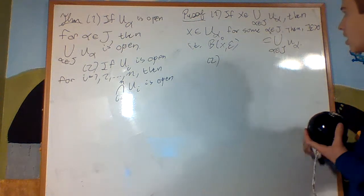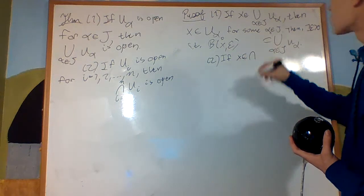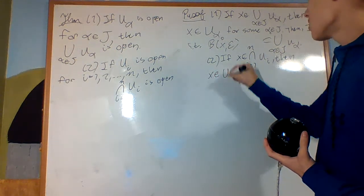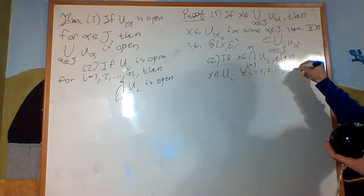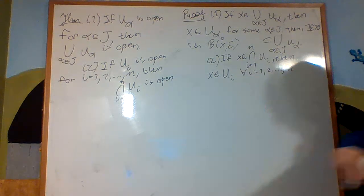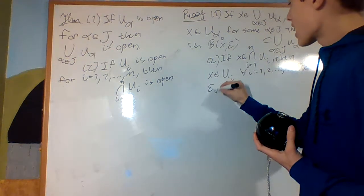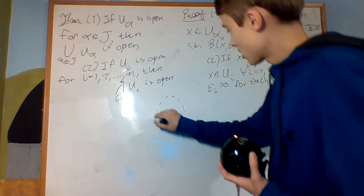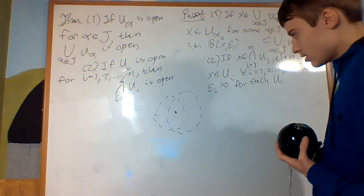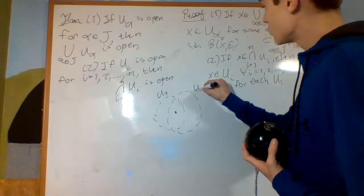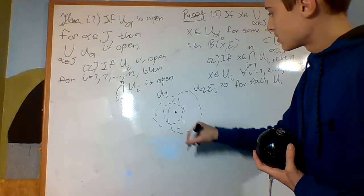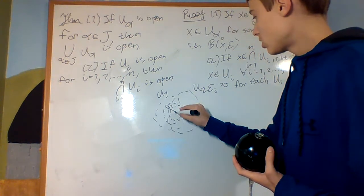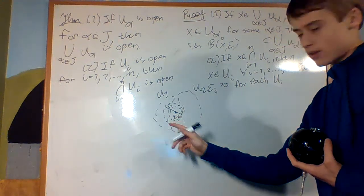For the finite intersection one, if x is an element of the intersection from i equals 1 to n of U_i, then x is an element of U_i for all i equals 1 to n. But each U_i is open. Pick epsilon_i bigger than zero for each U_i. So if I had two sets, and my point was in the intersection, I'd pick, and this one was U_1, this one's U_2. I'd pick this one, which is inside U_1, I'll call it epsilon 1, that radius, epsilon 1, and then another one, which is inside U_2, I'll call epsilon 2.